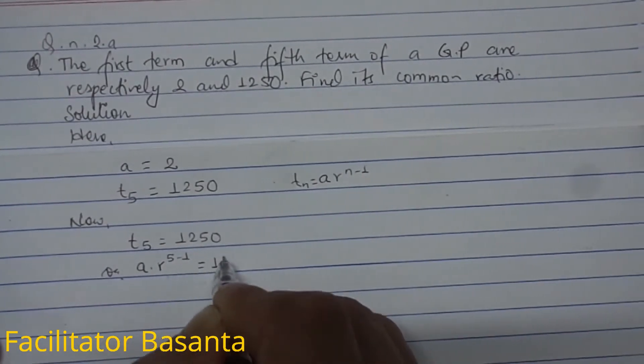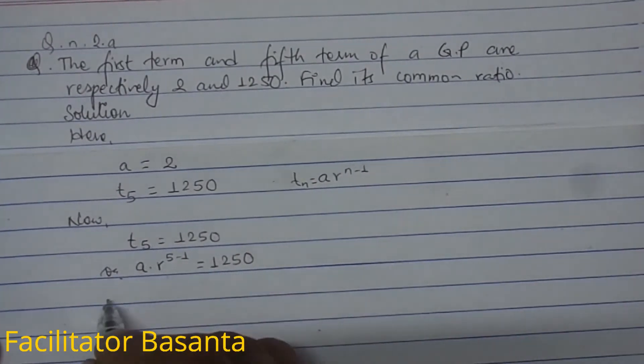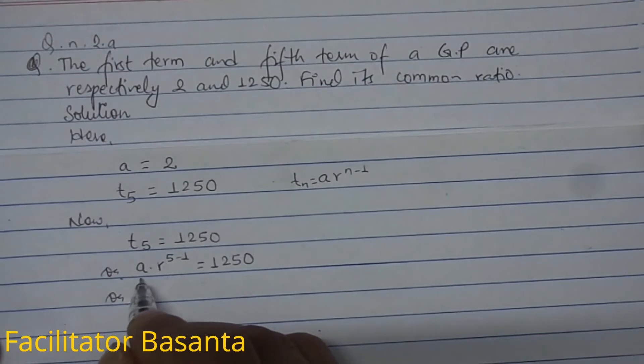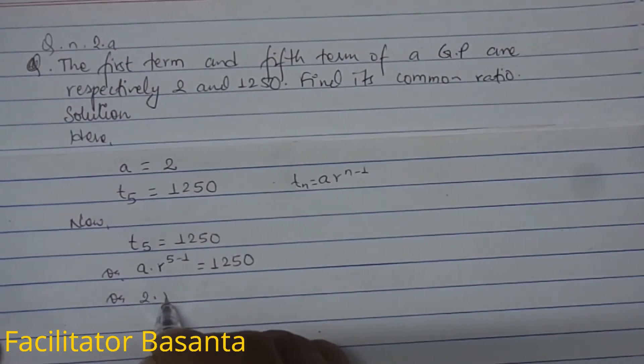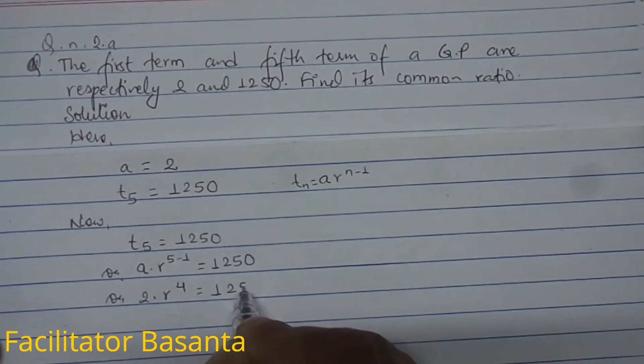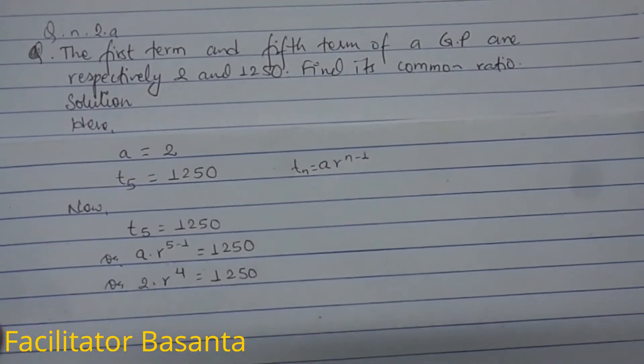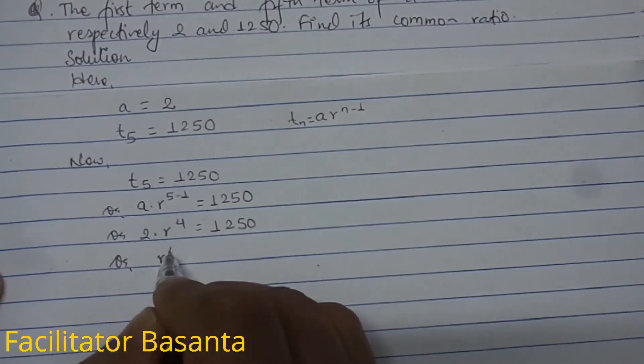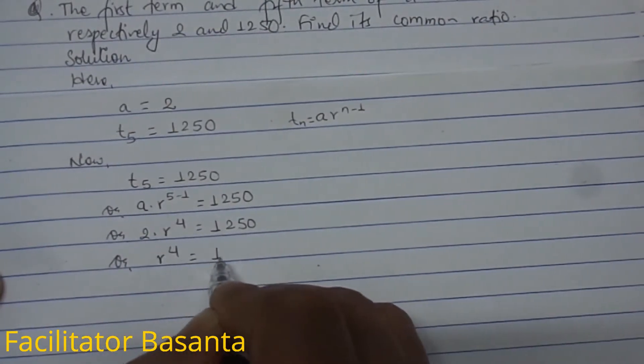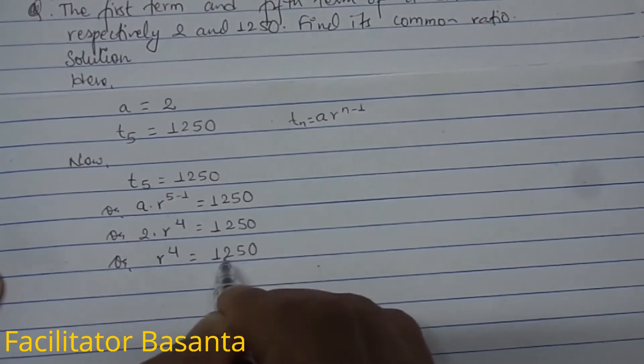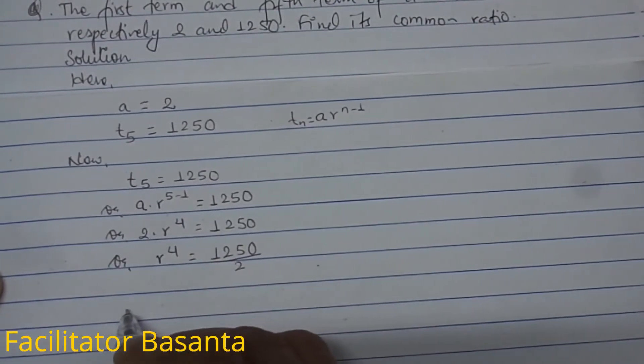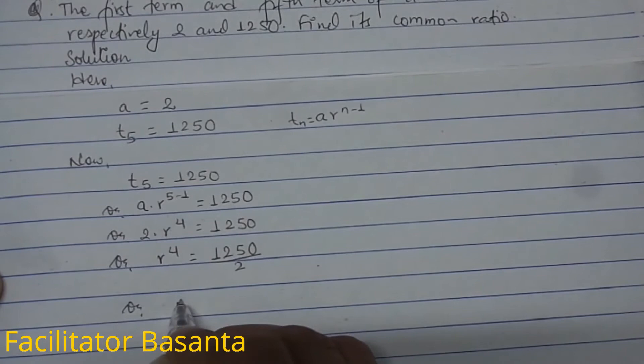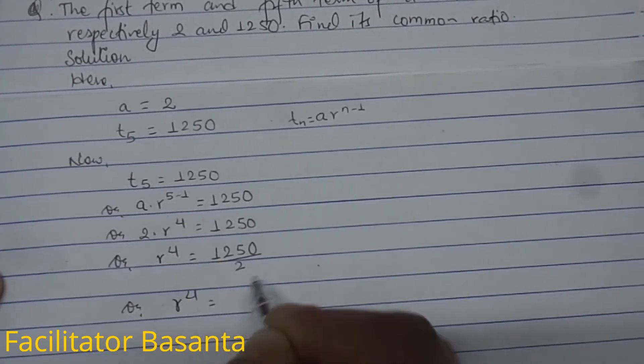The value of a is 2, and 5 minus 1 is 4, so we have 2 times r to the power 4 equals 1250. Therefore, r to the power 4 equals 1250 divided by 2, which equals 625.